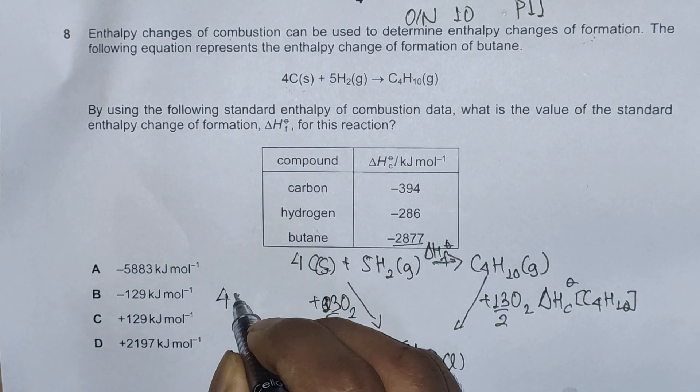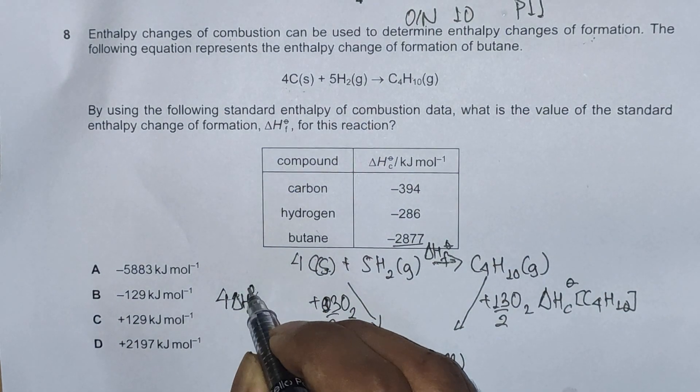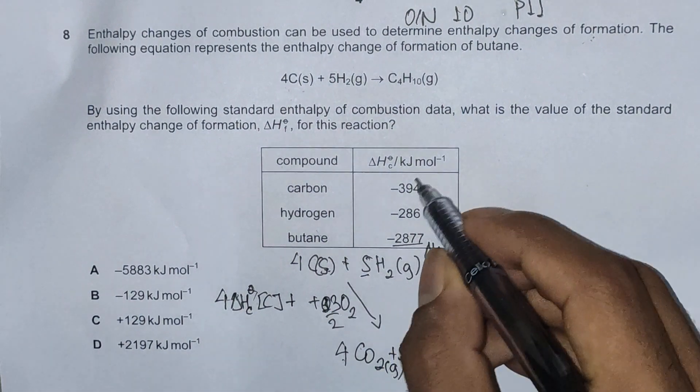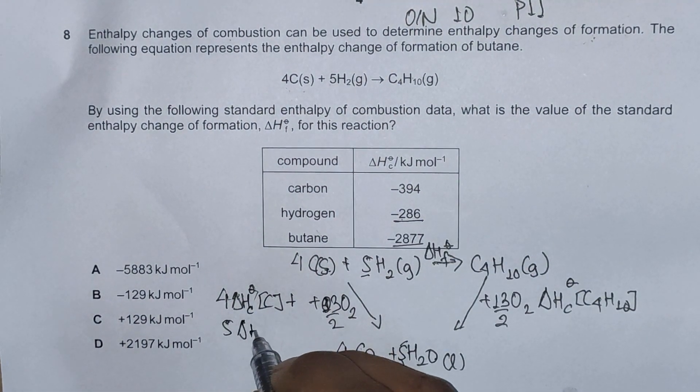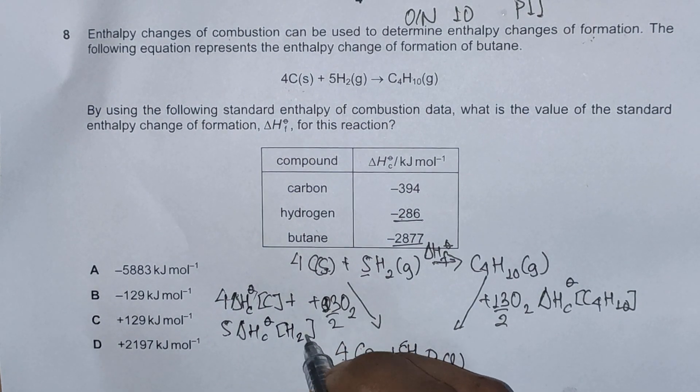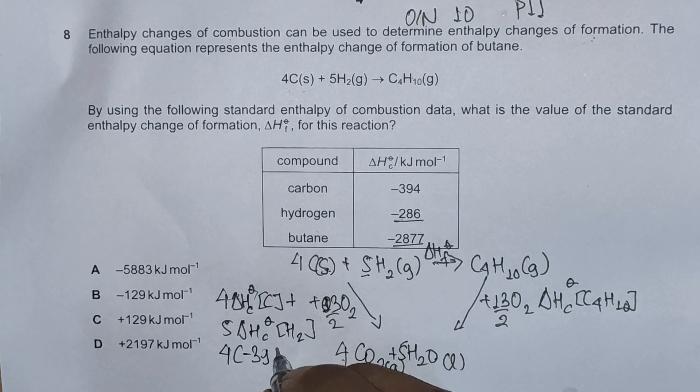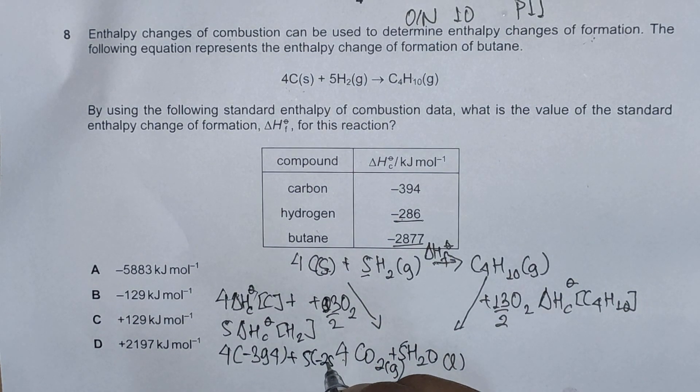And this arrow represents 4 times enthalpy change of combustion of carbon plus 5 times enthalpy change of combustion of hydrogen. So this is 4 times minus 394 plus 5 times minus 286.